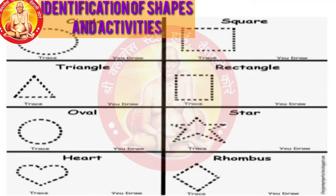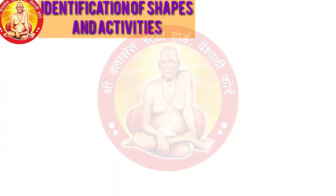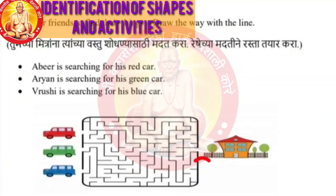R-E-C-T-A-N-G-L-E — Rectangle. O-V-A-L — Oval. S-T-A-R — Star. H-E-A-R-T — Heart. R-H-O-M-B-U-S — Rhombus.